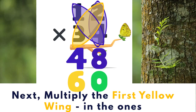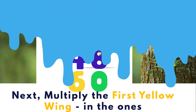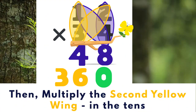Next, multiply the first yellow wing in the ones place, which in this case is two times three, which is six. Then, multiply the second yellow wing in the tens — it would be one times three, which is three.